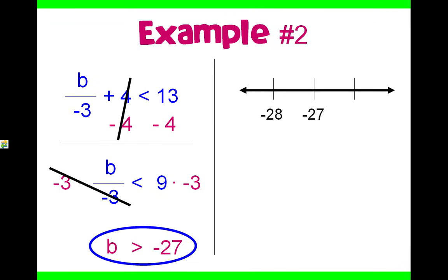If we are to graph, we have negative 27 and b cannot be equal to it, so we're going to leave an open circle. And b is everything greater than that negative 27.